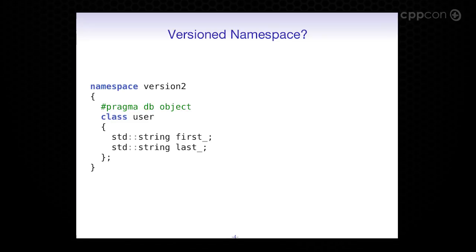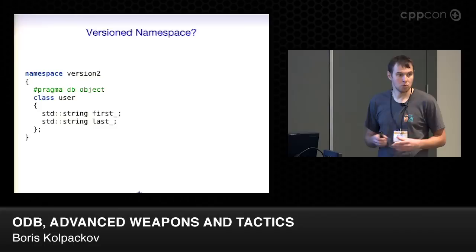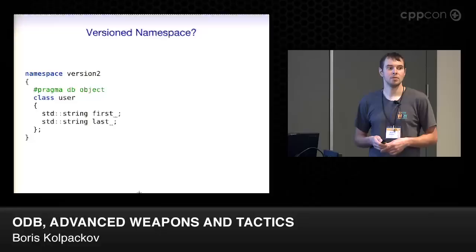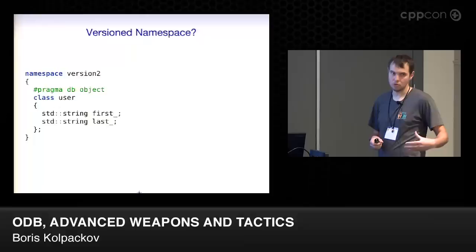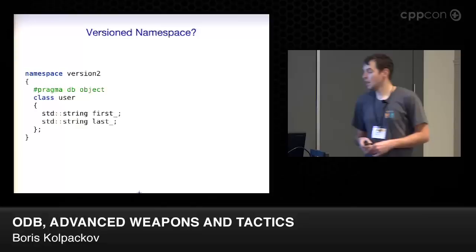One suggestion is stashing old versions of our classes into some versioned namespaces. But that's too much luggage — or some might call it garbage — to carry around with the application. ODB solves this differently, and the idea is to support soft model changes.